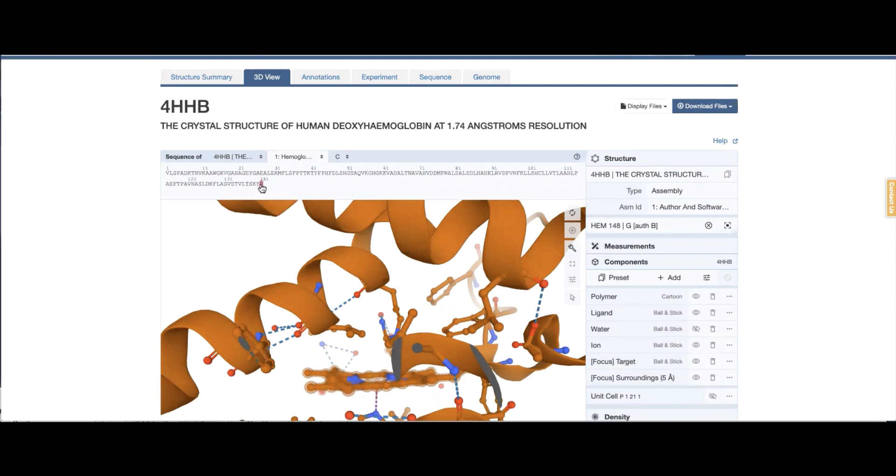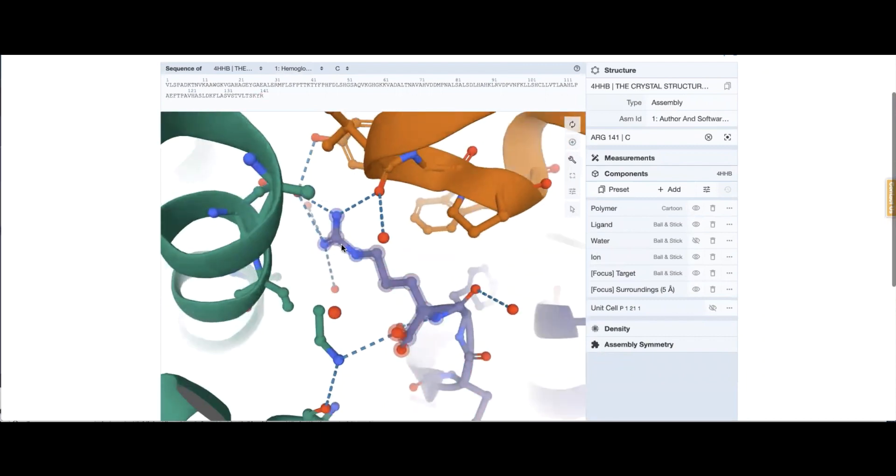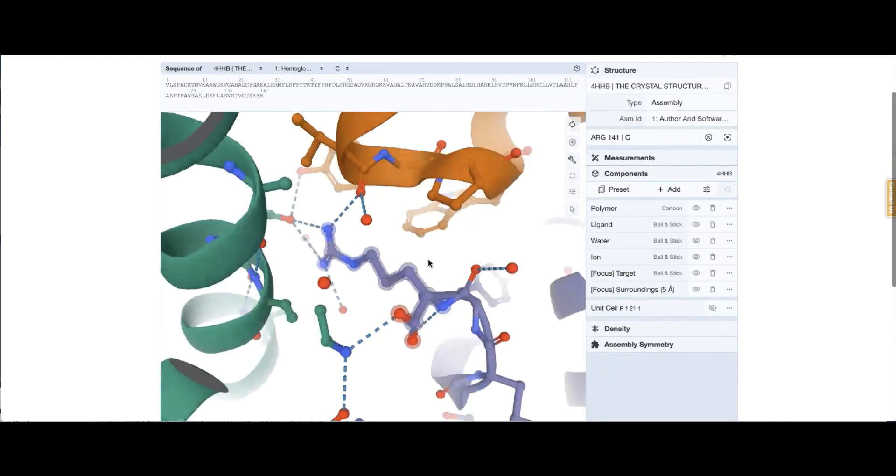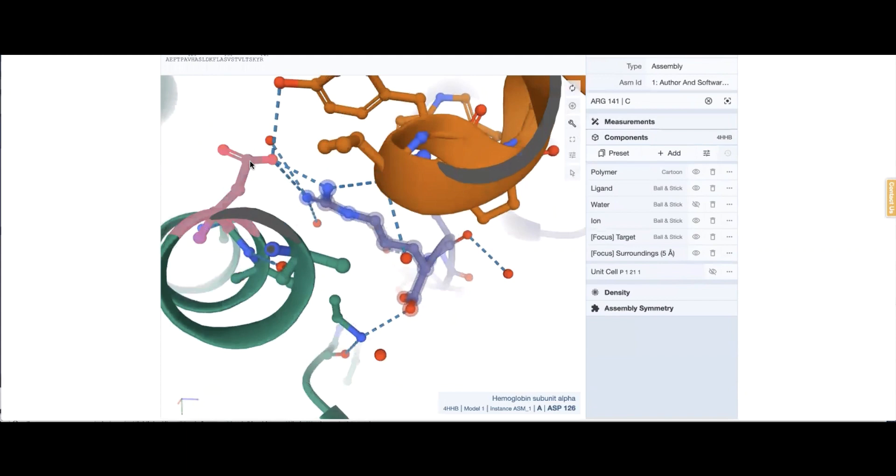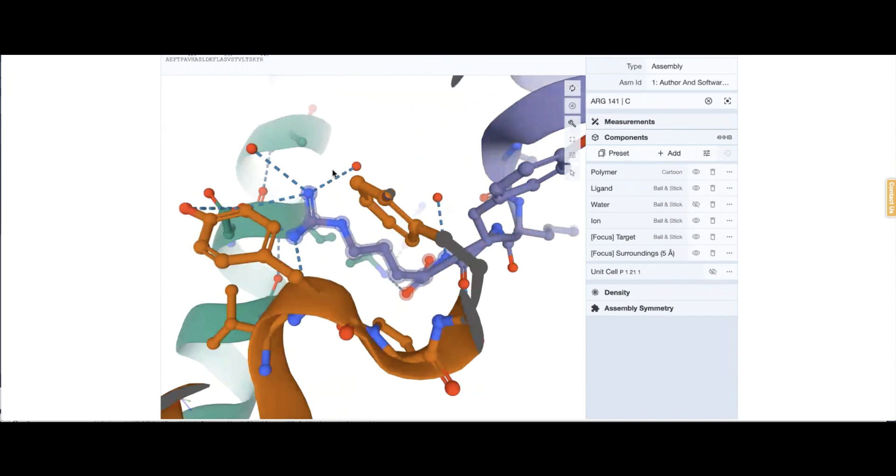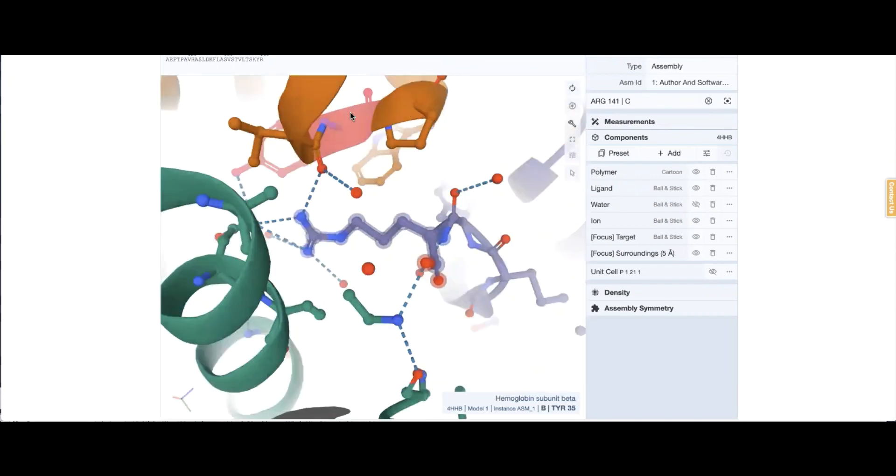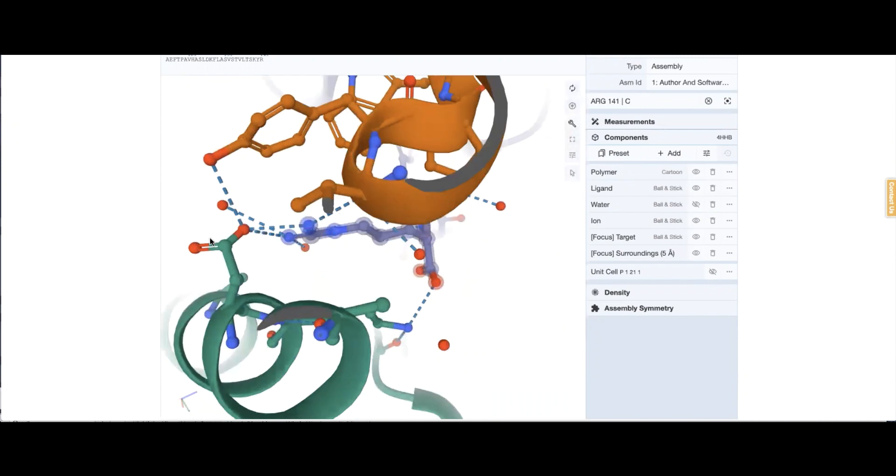If I click on this arginine, this purple colored arginine is the one in question. So notice this arginine is interacting with this aspartate in chain A. It is interacting with some waters. It is also close to this particular tyrosine from chain B, but it's not a direct interaction. It is via this aspartate.